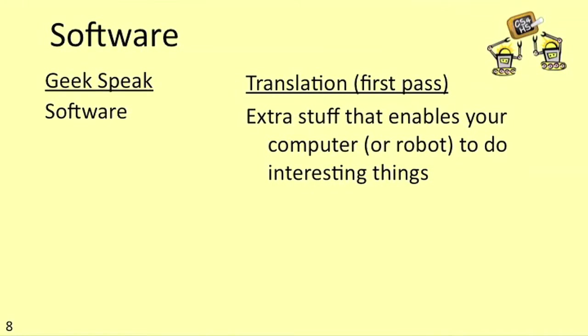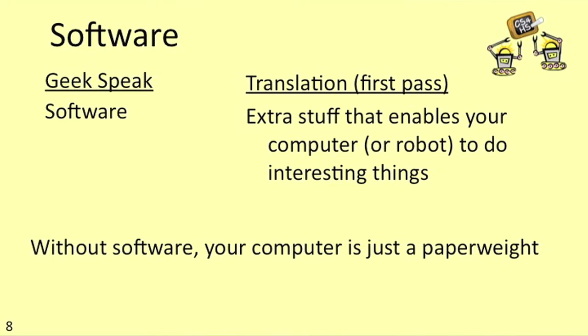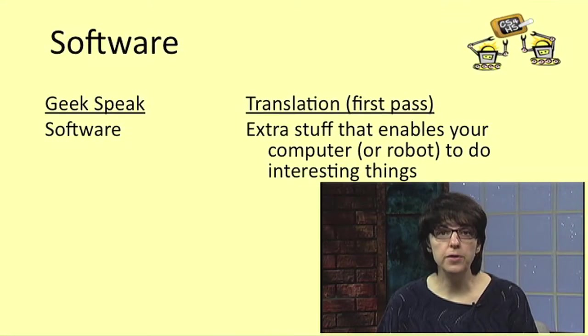I'll explain what software actually is in more detail in a minute, but let's start with the following definition. Software is the extra stuff that enables your computer or your robot to do interesting things. Without software, your computer and your robot are just very big paperweights. When you got your computer, it probably came with some built-in software, and maybe you've bought some additional software yourself. Whenever you use your computer, you're using software.